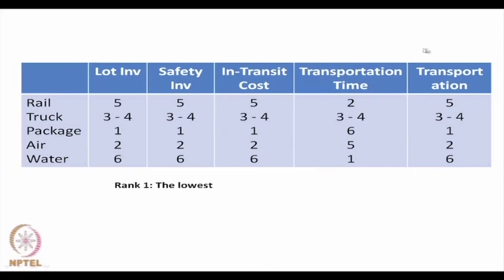The performance of the different transportation network designs has also been ranked. Here rank 1 means the lowest value for the given criterion. For example, water transport has the lowest transportation time cost-wise, while air or package carriers rank highest in speed. Each mode and network option has been ranked subjectively across different criteria, with rank 1 being lowest and rank 5 or 6 the highest value.